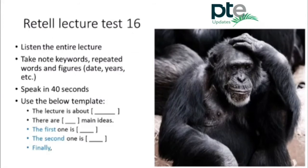Great apes — for example, gorillas and chimpanzees — probably have the potential for being much smarter than their current environment requires them to be. When a great ape is adopted in a human family and is required to do more human things, clearly the potential for that intelligence was there.